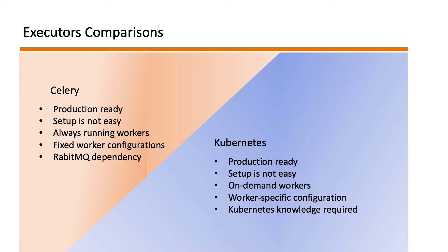In Celery you always have a fixed number of workers up and running with predefined configurations and resources, whereas in Kubernetes the workers spin up on demand and you can configure each worker with specified resources. If you already have knowledge of Kubernetes, I would highly recommend the Kubernetes executor. Otherwise, go for the Celery executor if you are not too worried about resource wastage, or if your workflow is heavy enough that you always have task instances running most of the time — that way you ensure the workers are always being utilized.